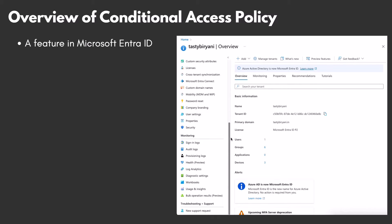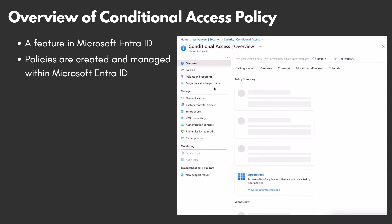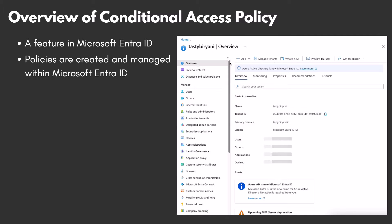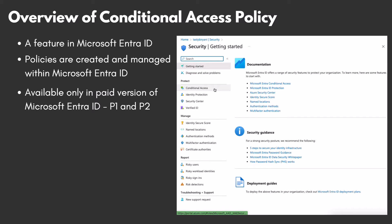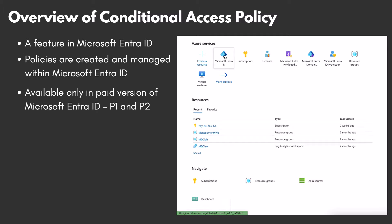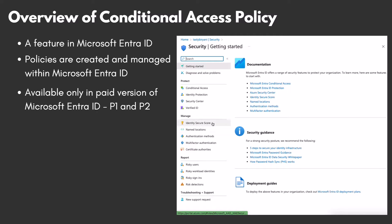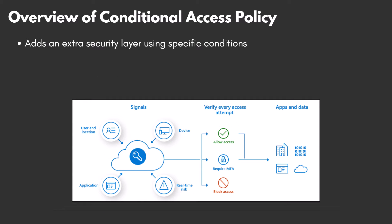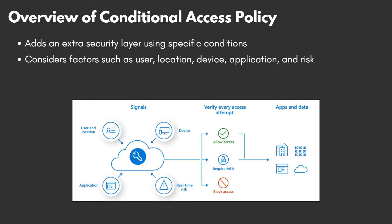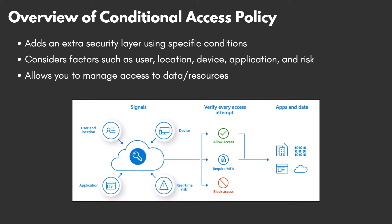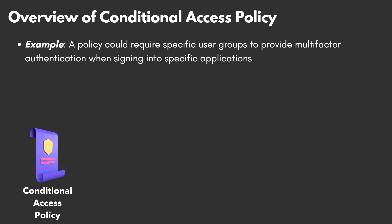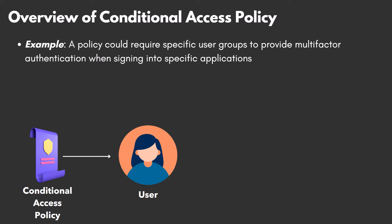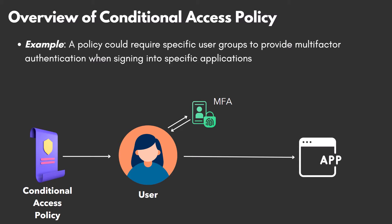Conditional Access Policy is a feature in Microsoft IntraID, created and managed there. It is only available in the paid version — both P1 and P2. It adds an extra security layer using specific conditions such as user, location, device, application, and user sign-in risks to manage who can and cannot access data or resources. For instance, you could set a policy that requires users from a specific group to provide multi-factor authentication when signing into a particular application.